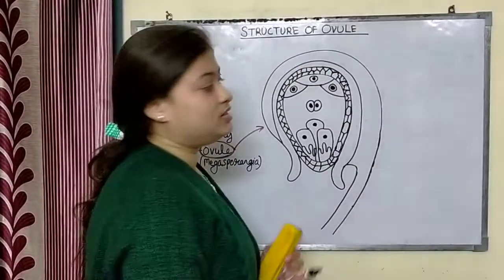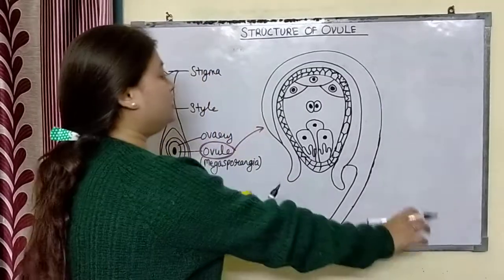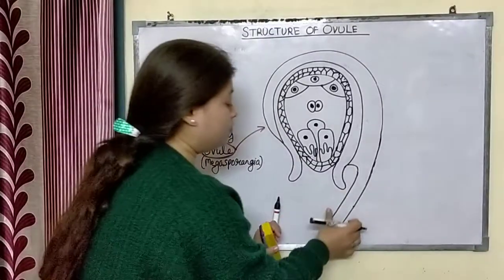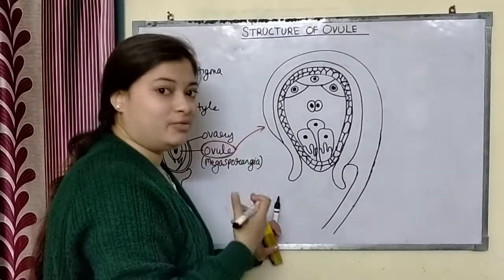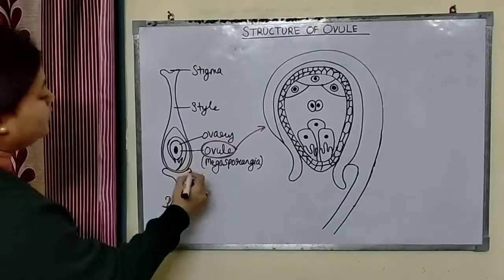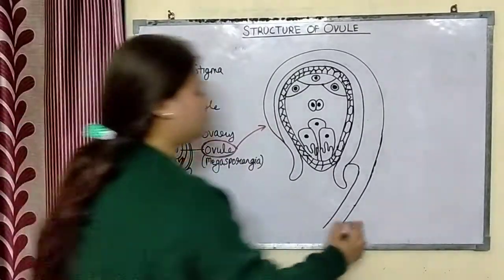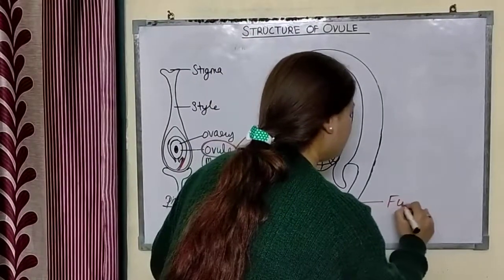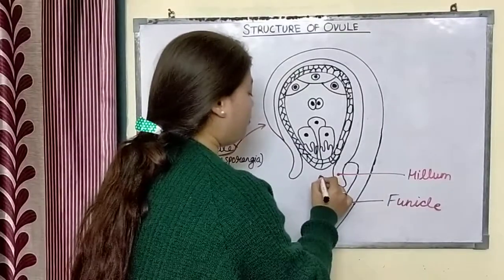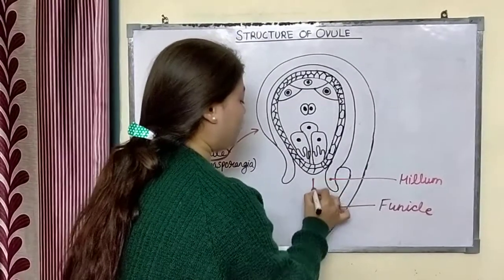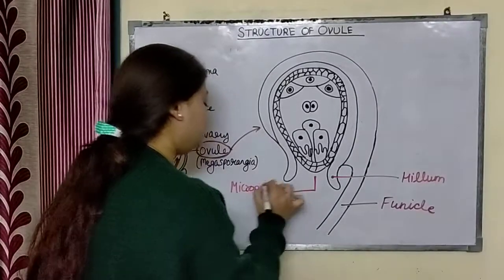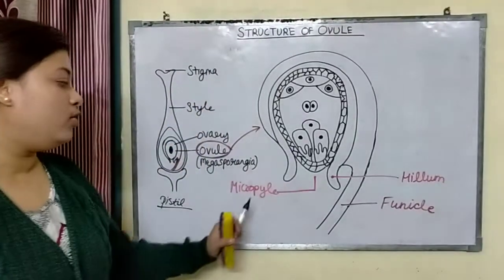This whole diagram is very important — it is a cross-section (TS) of ovule. We start labeling from this point. This is the stalk. Just as we put a pedicel in the flower to hold it, there is a small stalk here called the funicle. This opening is known as the micropyle opening.